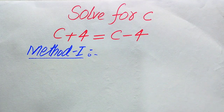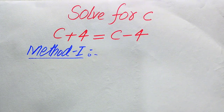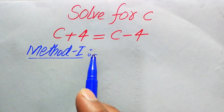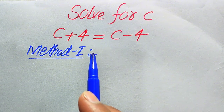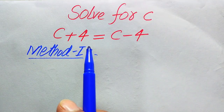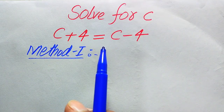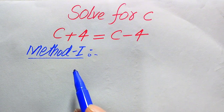The reason we solve this problem using two methods is that if your exam question asks you to find the values of c or the roots of this equation, you cannot get the value of c directly because c cancels out on both sides.